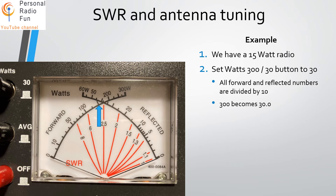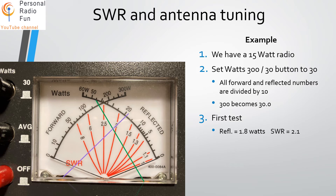When we key up the radio, both needles move. Looking at the forward needle first, it comes up to 15 watts. For our first test on this antenna system, we key up and the purple needle goes to 2.0 on the scale — but remember to divide by 10, so that's about 1.8 watts of reflected power. We look where the two needles cross, then check the red lines. We're just above the line marked '2', so our SWR is about 2.1 — that's way too high.